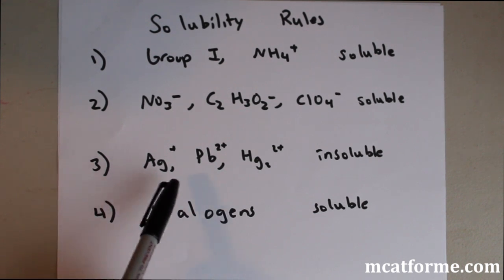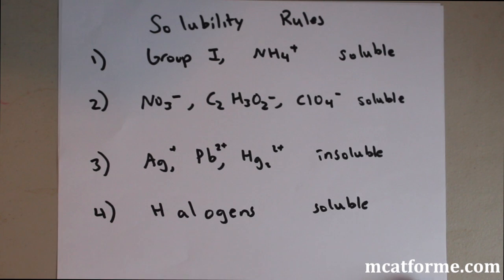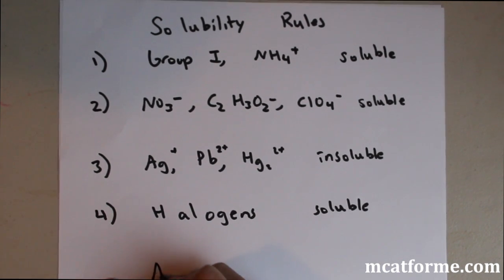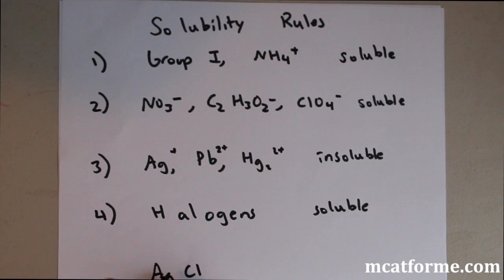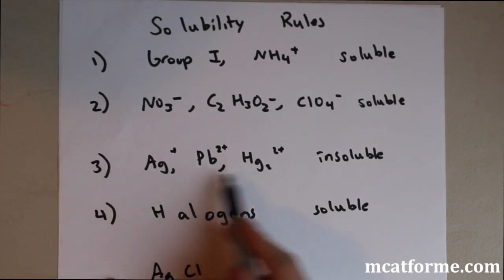For example, what if we have AgCl? Well, since the third rule comes before the fourth, we know that AgCl is going to be insoluble. So Ag and Cl, we have Ag being in rule number three, which is insoluble,